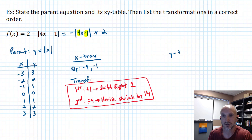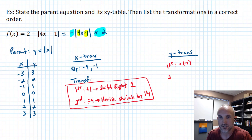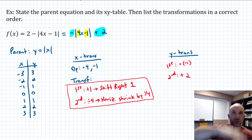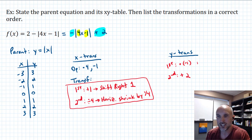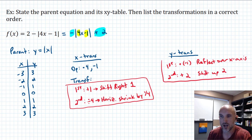The Y transformations happen outside of the parent operation. We've got times negative one and plus two. First, times by negative one; second, add two. If you multiply Y values by negative one, you're going to get a reflection vertically — that's a reflection over the X axis. Adding two to Y is going to shift up two. Those are the Y transformations — a little bit easier than the X's.